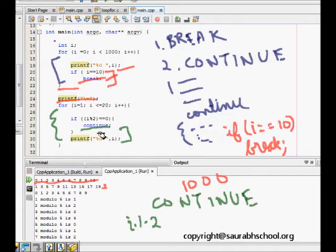If i is one, one percentage two is one, which is not equal to zero, so one is printed. When i becomes two, two percentage two is zero, so it continues and two is not printed. When i becomes three, three percentage two is one, which is not zero, so it doesn't continue and prints three. Similarly five, seven. This prints the odd numbers. This is about continue.